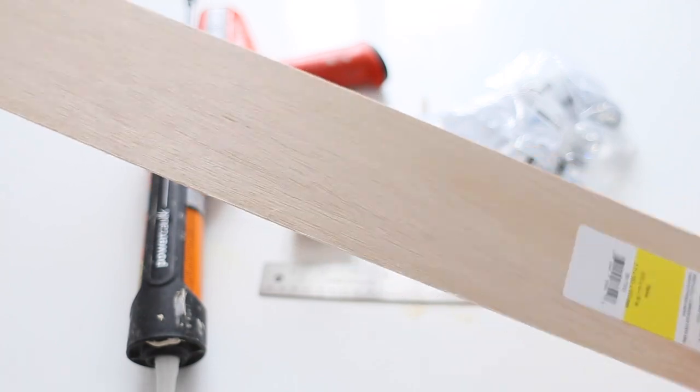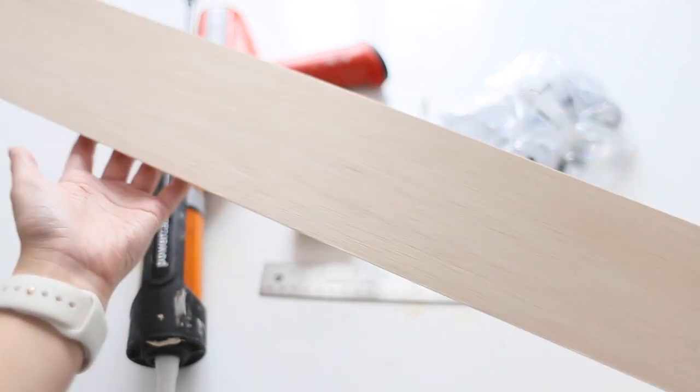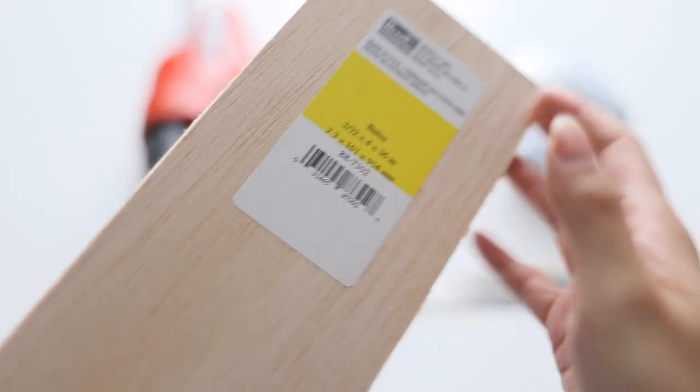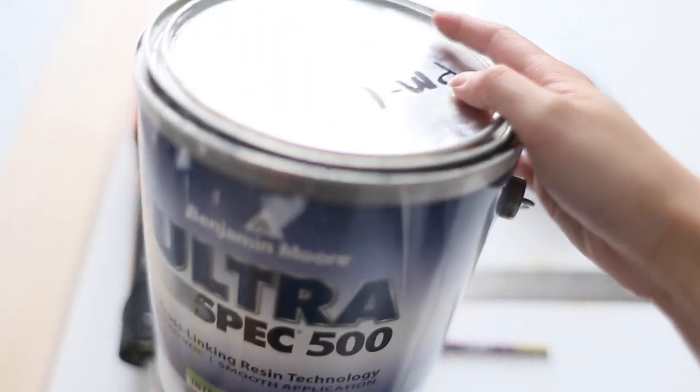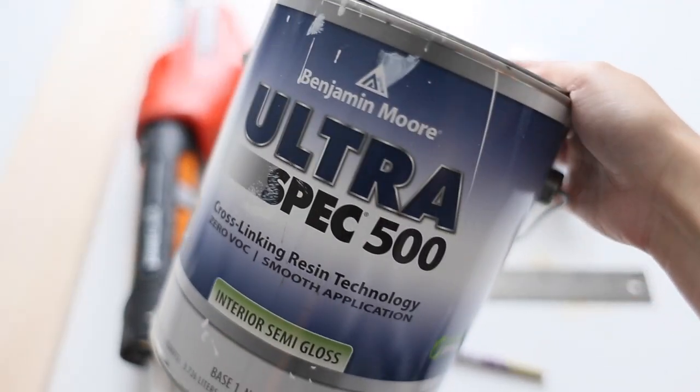For the trim, I got these sheets of balsa wood from Michael's, and they are a little bit softer, so it's easier to cut, so I do recommend them. I'm gonna use this leftover paint for the trim, but you can definitely use spray paint for a faster process.